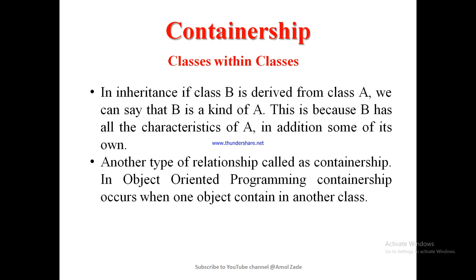As we know from the previous lectures, in inheritance, class B is derived from class A, so we say that B is a kind of A, because the derived class inherits the properties from the base class and acquires its features. So we call it as B is a kind of A.